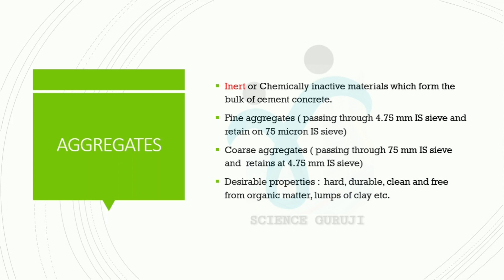Aggregates are inert or chemically inactive materials which form the bulk of cement concrete. Those which pass through 4.75 mm ISC and retain on 75 micron ISC are fine aggregates. Coarse aggregates are those which pass through 75 mm ISC and retain at 4.75 mm ISC.